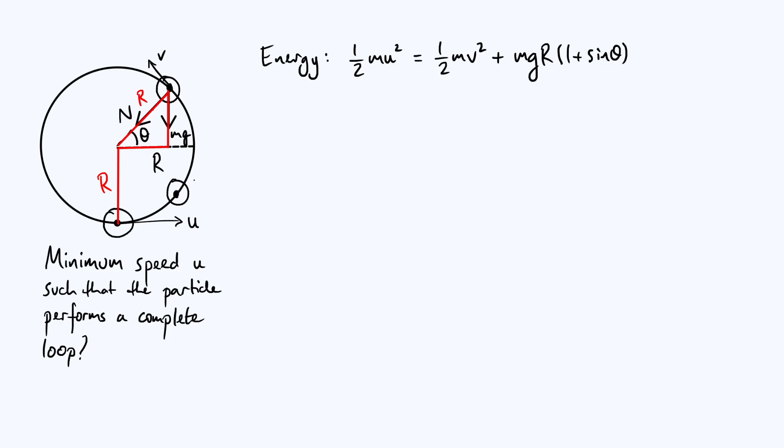Let's make v² the subject and we get v² = u² - 2gr(1 + sin θ). Conveniently the masses cancel out.